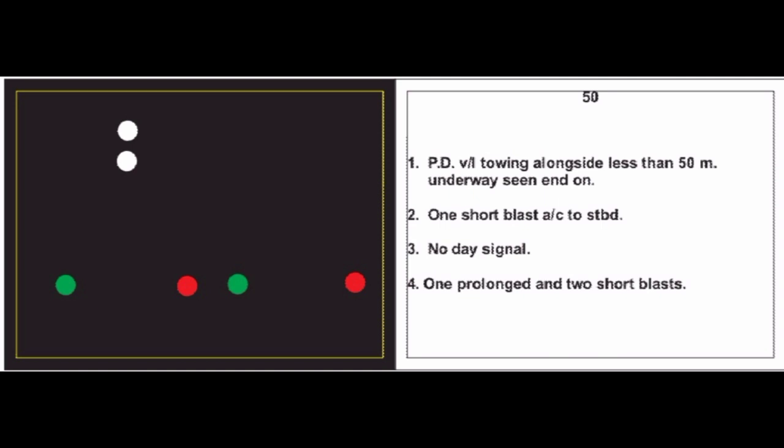Card 50 is the last card in this video. A power driven vessel towing alongside, less than 50 meters, underway, seen end-on. One short blast, alter course to starboard. No day signal. Sound signal: one prolonged and two short blasts. That concludes cards 1 to 50. The next video will continue from 50 to 100. If you feel these videos are useful, please comment, and all suggestions are welcome so I can improve future videos. Please do support so we can continue learning together.